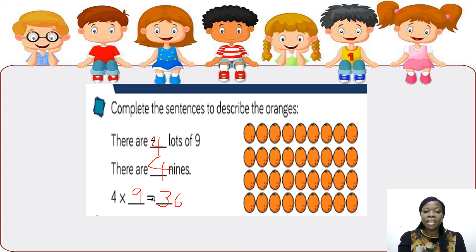So there are 4 lots of 9. There are 4 nines. And 4 times 9 equals 36.